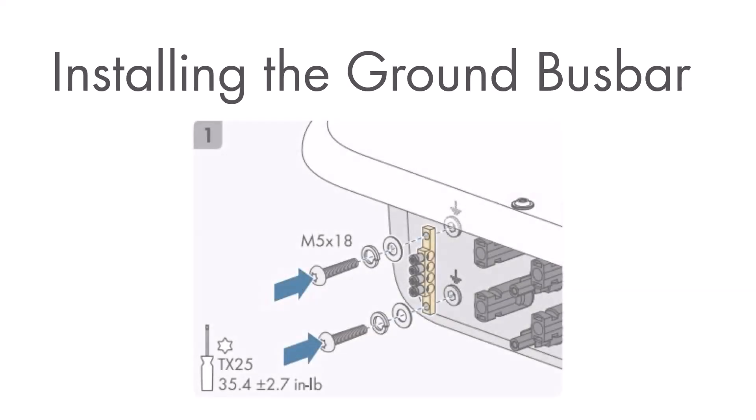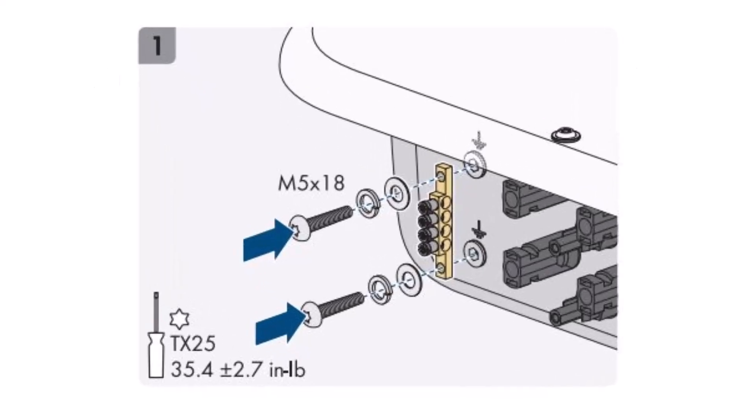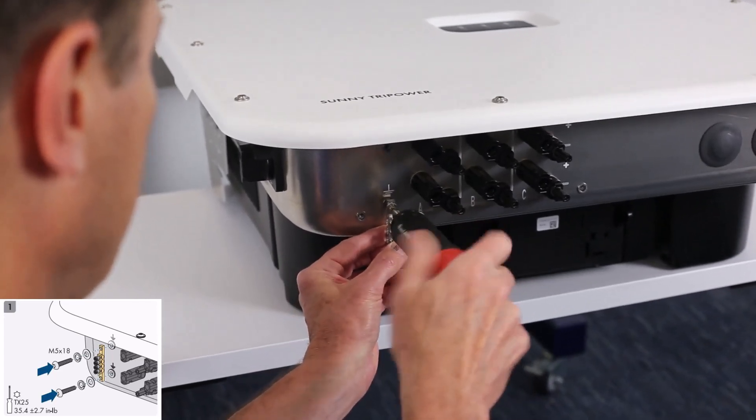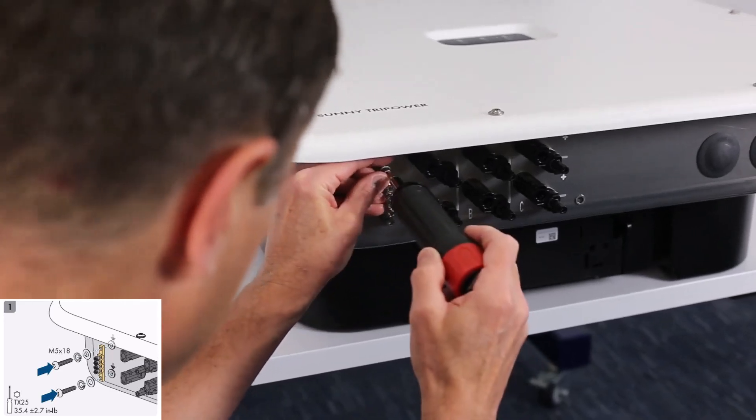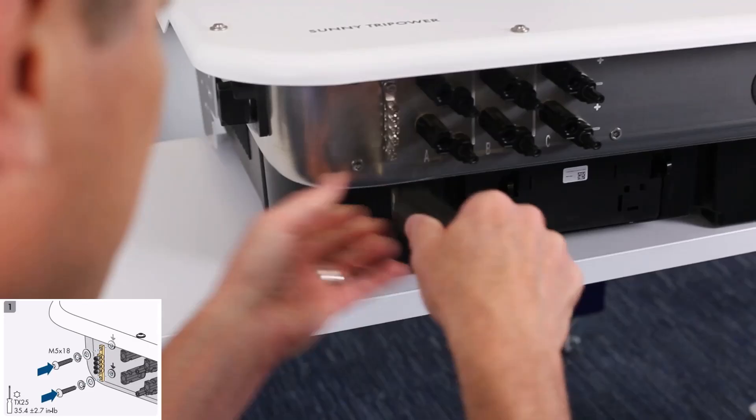The first installation we recommend doing is the ground bus bar. You would need a Torx 25 screwdriver and the two included M5 x 18 screws and washers. Begin by inserting the washers through the screws and secure the screws to the inverter with a Torx 25 screwdriver. For ease of installation, lay the STPX flat, such as on a table, and proceed to install the ground bus bar on the bottom left of the inverter. And tighten to 35 inch pounds.